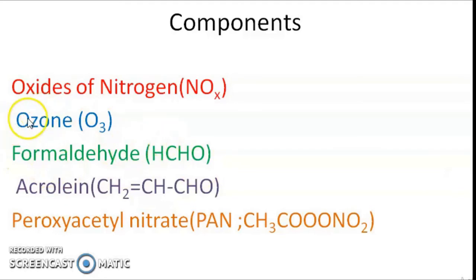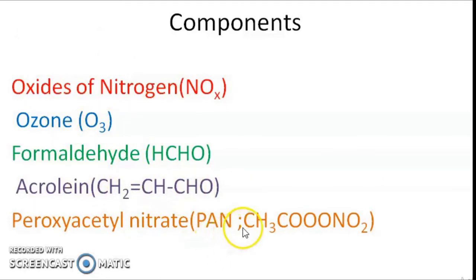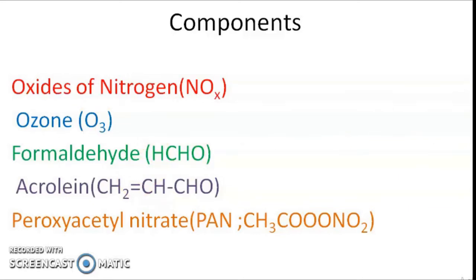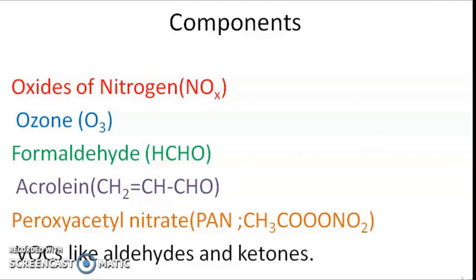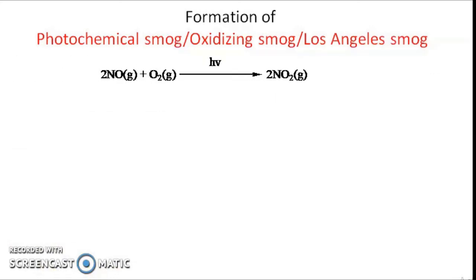Ozone, PAN, formaldehyde, and acrolein are all toxic. Ozone and PAN are more toxic. PAN, acrolein, formaldehyde, and even ozone are secondary pollutants. VOCs, aldehydes, and ketones are also components of photochemical smog — VOCs are usually the primary pollutants. Now how is photochemical smog formed?